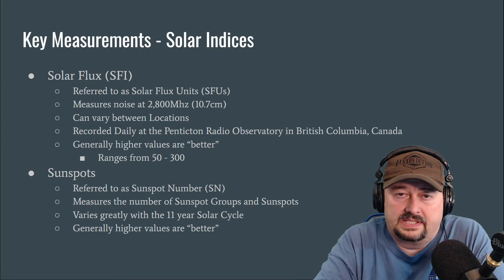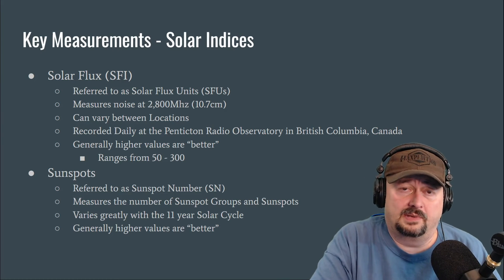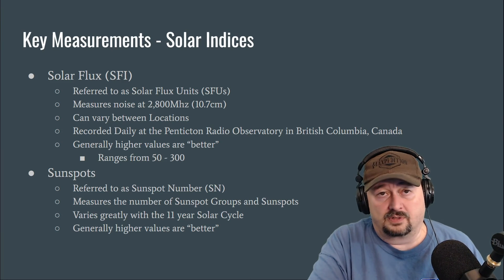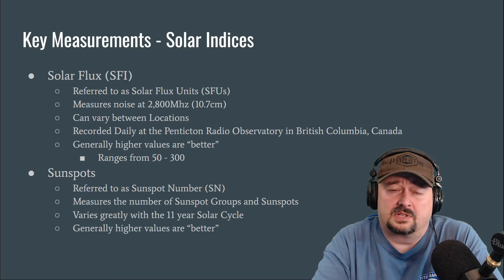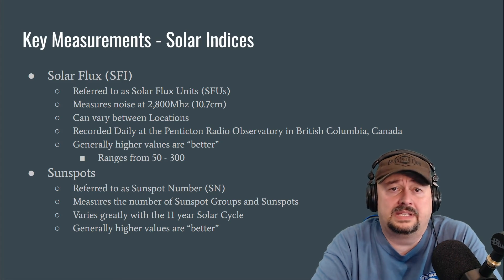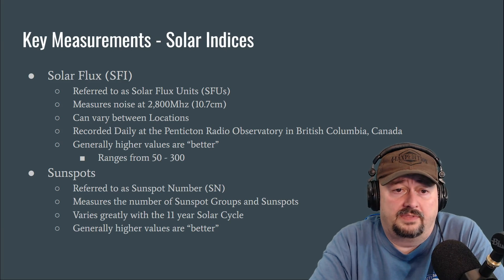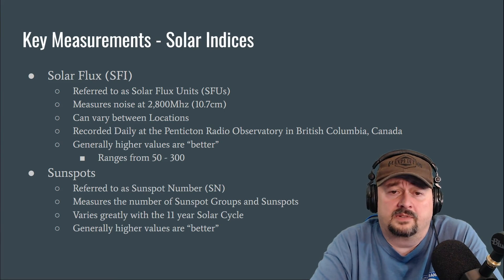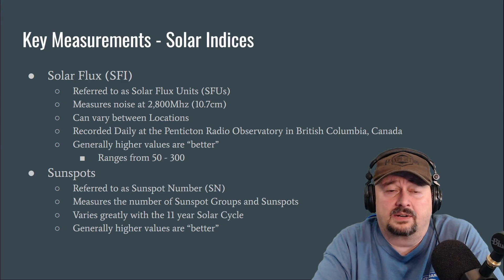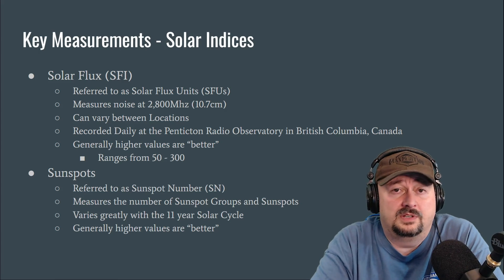Briefly, let's talk about solar indices. The first is solar flux, measured as your SFI number — referred to as solar flux units or SFUs. The solar flux index measures noise at 2.8 gigahertz, or the 10.7 centimeter band. An official recording happens every day at the Penticton Radio Observatory in British Columbia, Canada. Ranges are typically from 50 to 300, and once you get around 120–125 and higher, that's when you should break out the radio and have some fun.